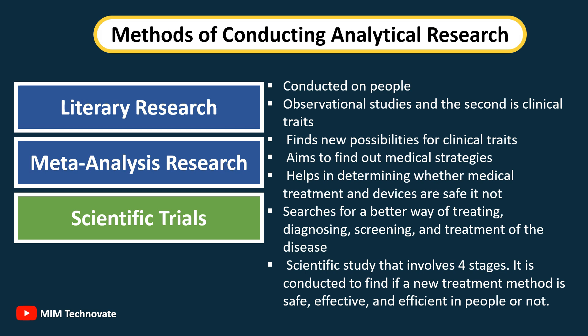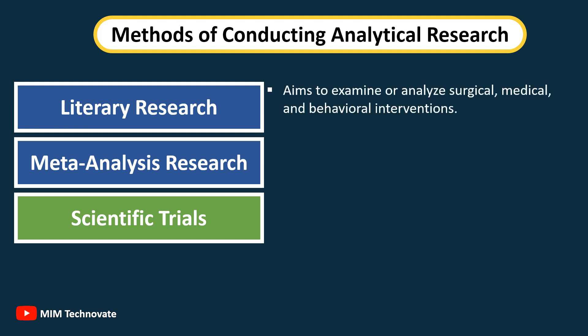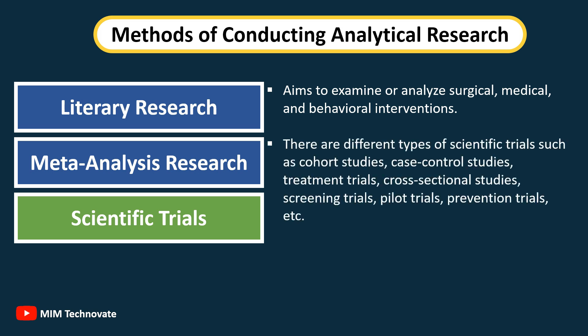Scientific trials research is a scientific study that involves four stages. It is conducted to find if a new treatment method is safe, effective, and efficient in people or not. It aims to examine or analyze surgical, medical, and behavioral interventions. There are different types of scientific trials, such as cohort studies, case control studies, treatment trials, cross-sectional studies, screening trials, pilot trials, prevention trials, etc.